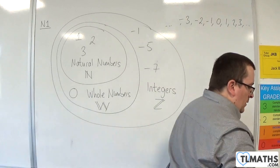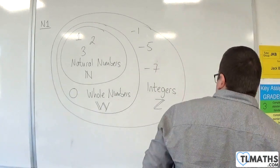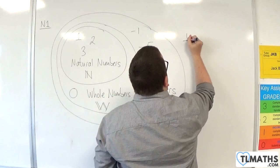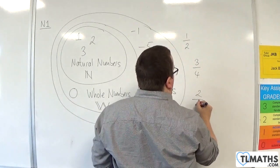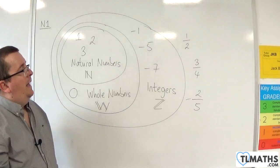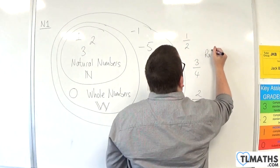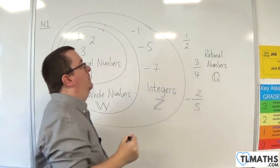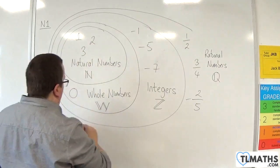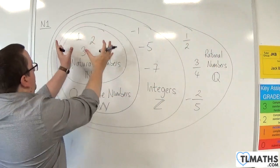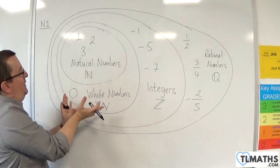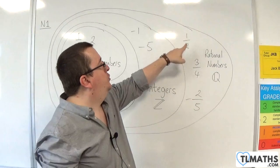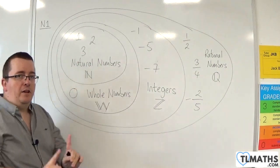Once you learn about the integers, you then learn about fractions — like one half, three quarters, two fifths, or minus two fifths. We refer to those as the rational numbers. The rational numbers use a double Q for quotient, and they include all of the natural numbers, plus 0, all of the integers, and all fractions where you can write one integer over another — of course, you can't have 0 in the denominator.